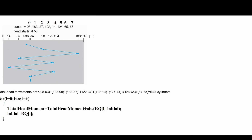The tracks range from 0 to 199. In ascending order: 0, 14, 37, 53, 65, 67, 98, 122, 124, 183, 199. Note that 0 and 199 are not requests — they are the borders of the cylinder. 0 is the minimum value of the disk, and 199 is the maximum value. Initially the disk head is at 53.